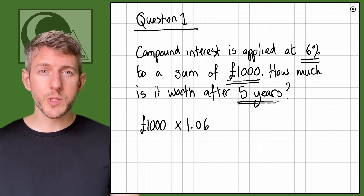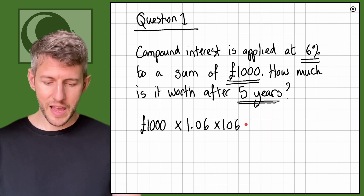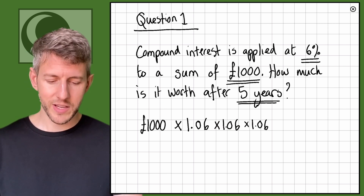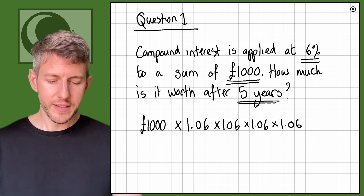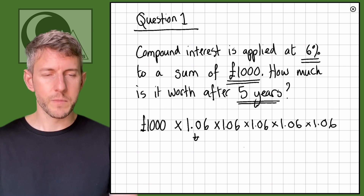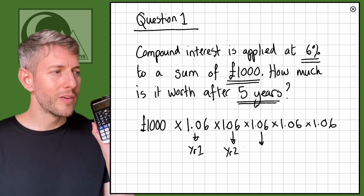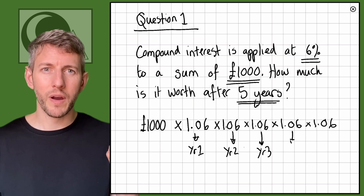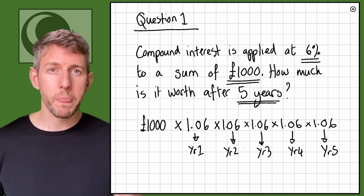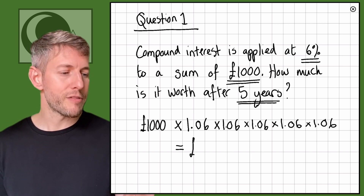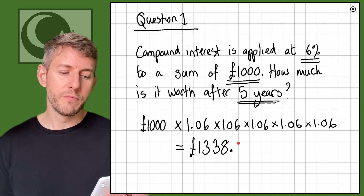If I want to increase it again, I simply multiply by 1.06 again. And because I want to do that for five years, I do this five times. So I've done 1,000 multiplied by 1.06, five times, and that equals £1,338.225.